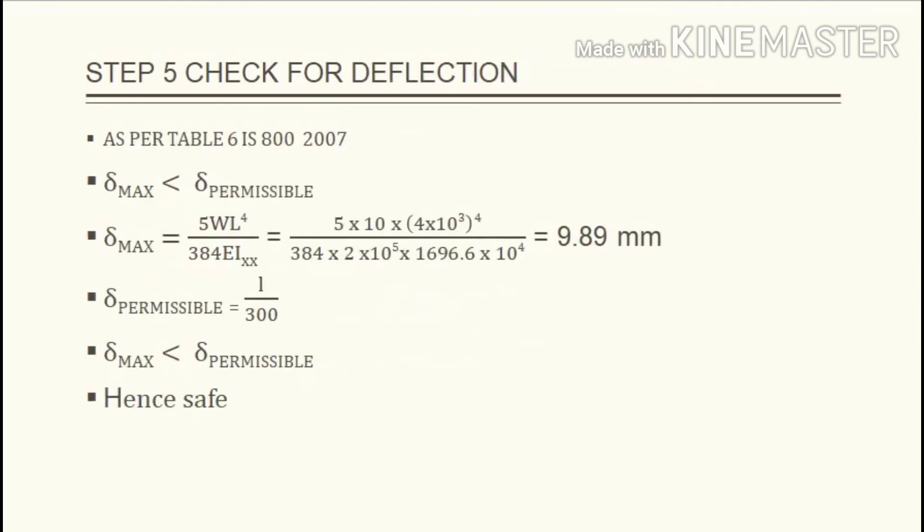Next is check for deflection. As per table 6 in IS800 2007, maximum deflection should be less than permissible deflection. Maximum deflection equals 5 WL raised to 4 divided by 384 E times Ixx. That equals 5 times 10 times 4 times 10 cube whole raised to 4 divided by 384 times 2 times 10 raised to 5 (Young's modulus of steel) times Ixx 1696.6 times 10 raised to 4, which equals 9.89 mm. Deflection permissible equals L by 300. Hence deflection maximum is less than deflection permissible. Hence it is safe.